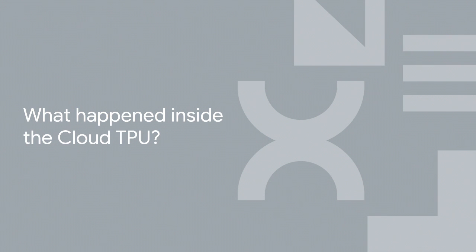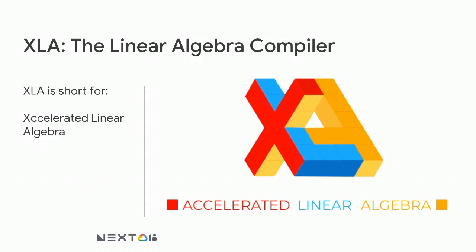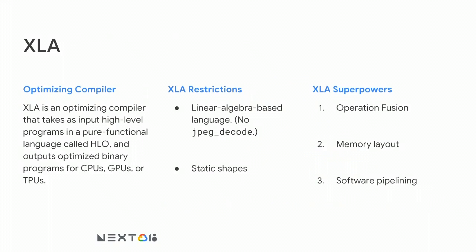What actually happened inside the Cloud TPU? TPU chips are not x86 chips — you can't run a standard program from GCC or Clang. To run a program on a Cloud TPU you need a compiler: we use the XLA compiler. XLA stands for Accelerated Linear Algebra. It's a custom domain-specific compiler that takes in high-level, pure functional programs in a language called HLO and outputs optimized binary programs for CPUs, GPUs, or TPUs. XLA has a few restrictions: it's a high-level linear-algebra-based language with matrix multiplies, convolutions, broadcast, reduce-sum ops, but no branchy things like JPEG decode. It also requires static shapes.